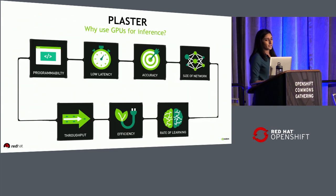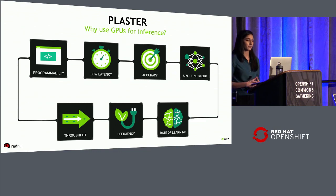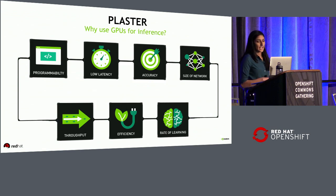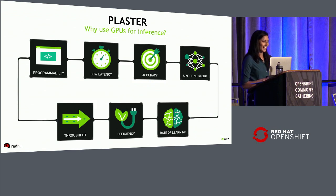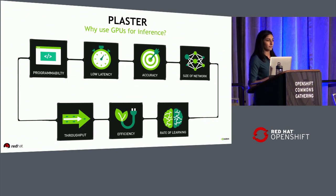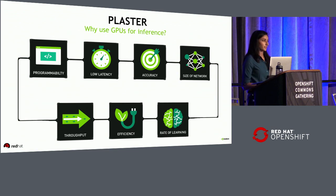Focusing more on inference and why GPUs are necessary, there's this idea of PLASTER, which stands for programmability, low latency, accuracy, size of the network, throughput, efficiency, and the rate of learning. Latency and speed is not the only factor here — all these factors contribute to a successful inference deployment, and using GPUs delivers on all these factors.